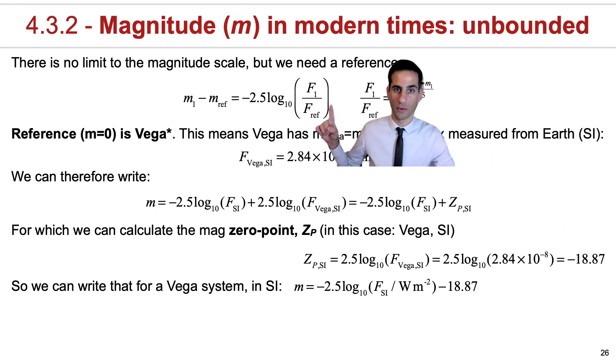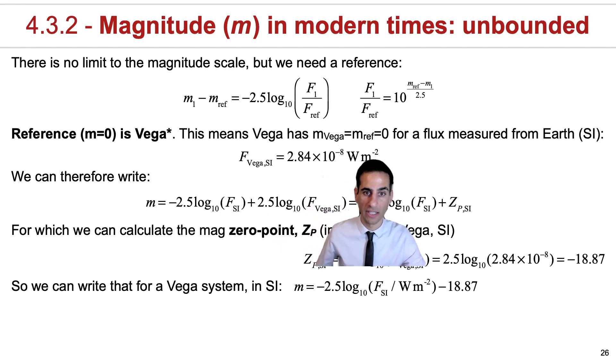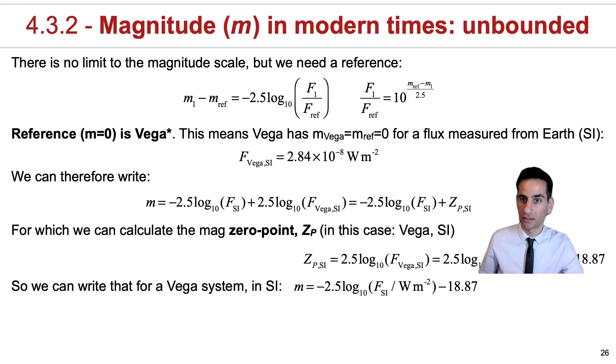The reason why this is used a lot in astronomy is because we can very easily calculate it for different instruments. For now, the important thing is to realize that for the Vega system, all we're doing is, if you take this equation, we're essentially just using the properties of logs. So if you have a division, you can transform that into a minus, because it's minus minus, this becomes a plus.